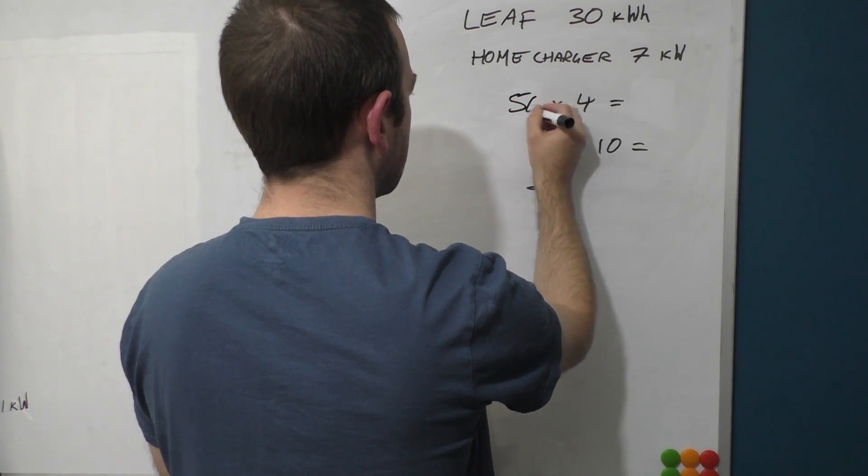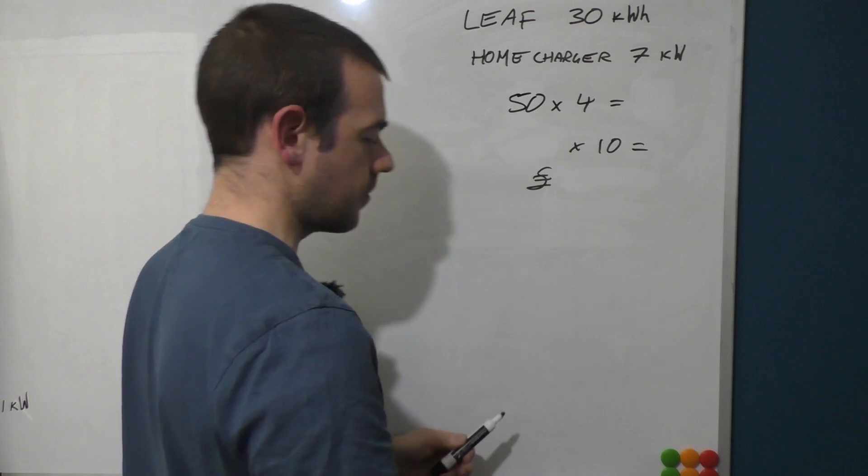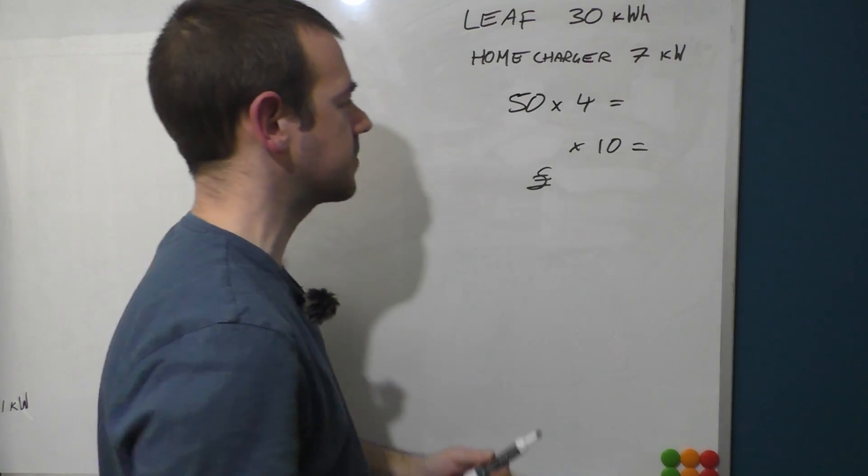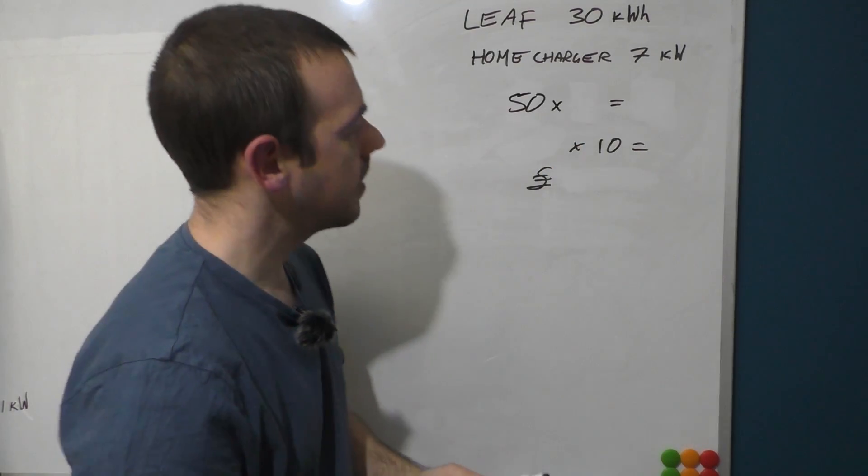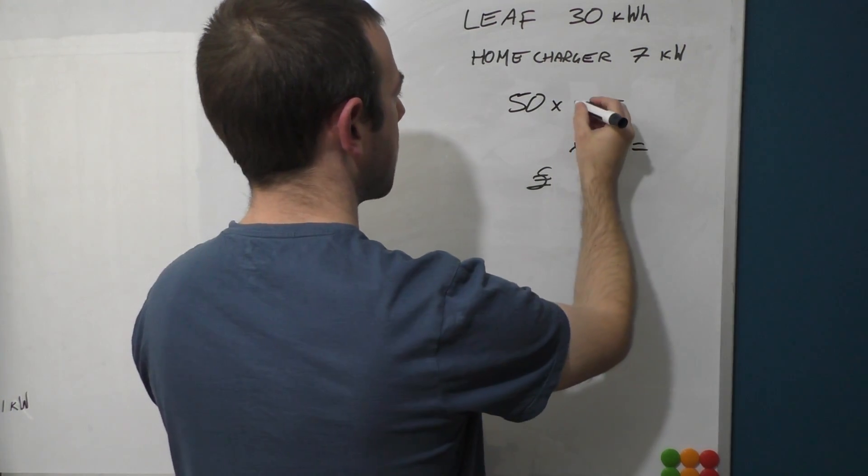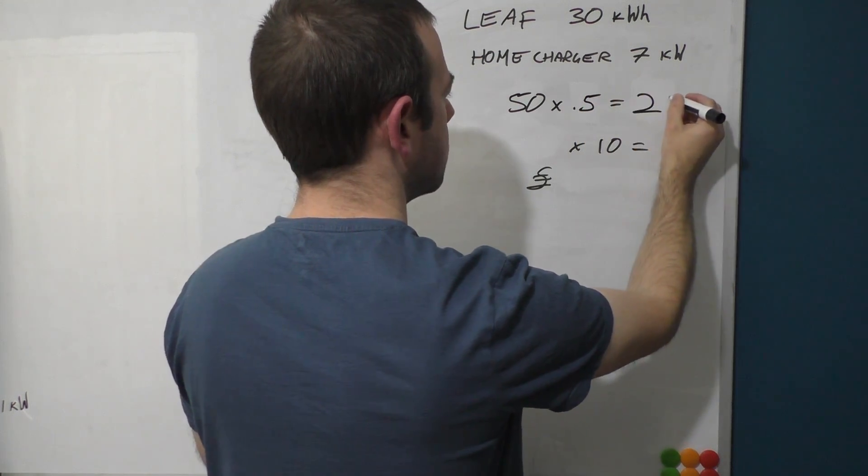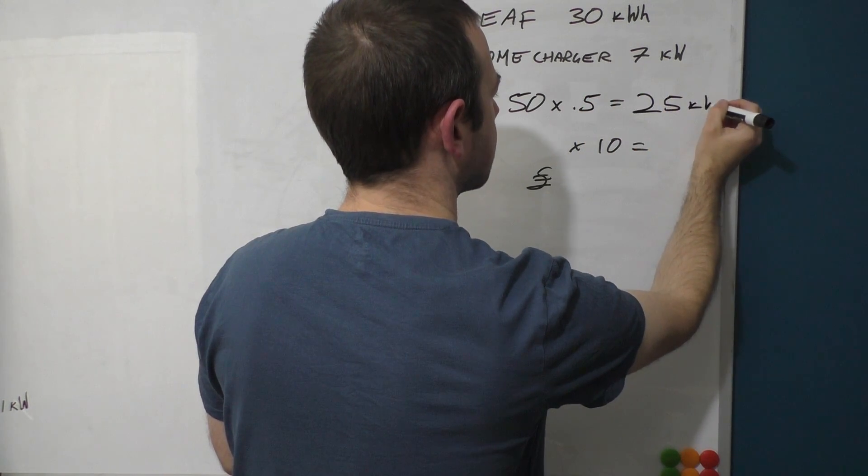Then that would be 50 kilowatts. Obviously only a 30 kilowatt-hour battery, it's not going to take that long to fill it up, which is why they're called rapid chargers and not fast ones. So we don't want to do that over four hours. We'll just plug it in for half an hour. So that would be 0.5, which equals 25 kilowatt-hours of energy.